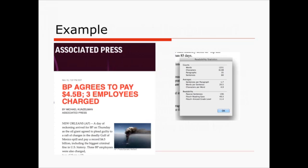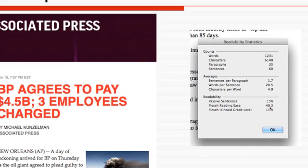An example is this particular news item about BP settlement in 2012. In this case, the readability statistics are displayed over here on the right. And the Flesch-Kincaid grade level for this particular passage was 11.4.